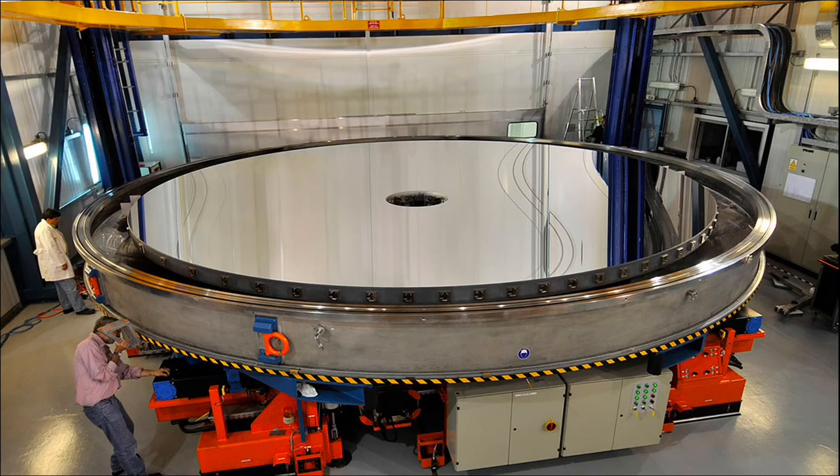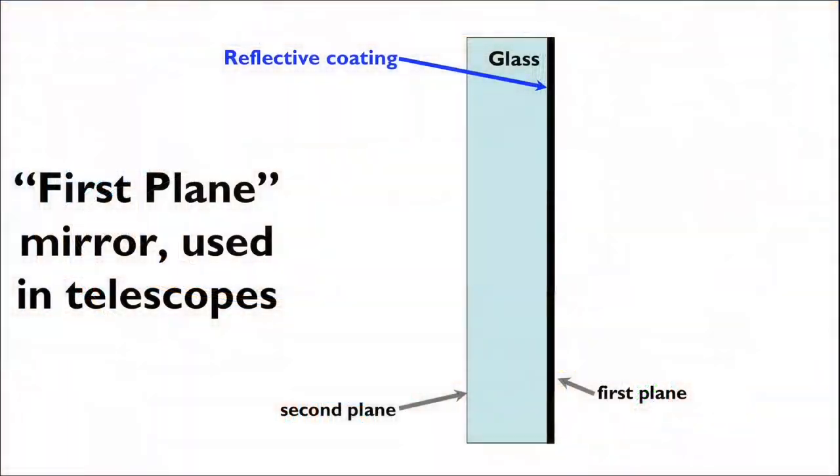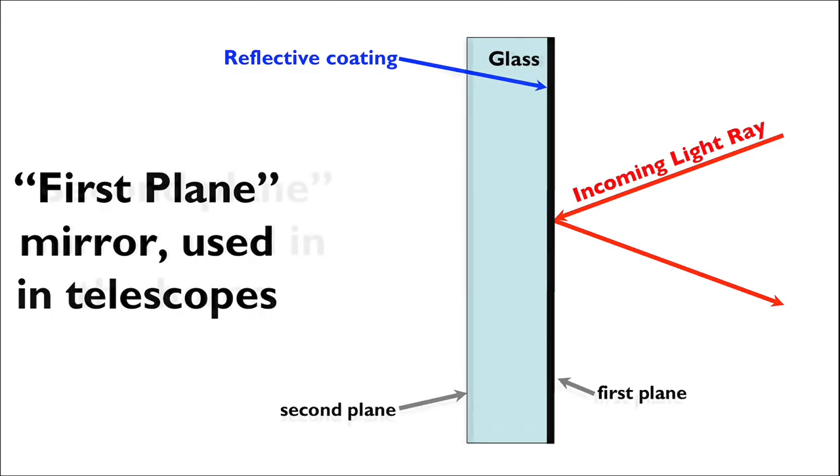The reason why these mirrors are constructed in this order is because reflecting telescopes use what we call first plane mirrors. In a first plane mirror, light is immediately reflected off of the reflective surface on the side of the incoming light. In this type of mirror, the light rays cannot penetrate through the reflective coating and enter the glass behind, so we have an immediate reflection.